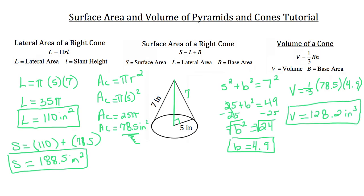Oftentimes the longest part of these calculations is finding the height or slant height, depending on what you've been given. You want to get a lot of practice calculating those two pieces — it always comes down to how well you can use the Pythagorean theorem and how quickly you can get the work done. Remember, you want to be both accurate and fast with your work.